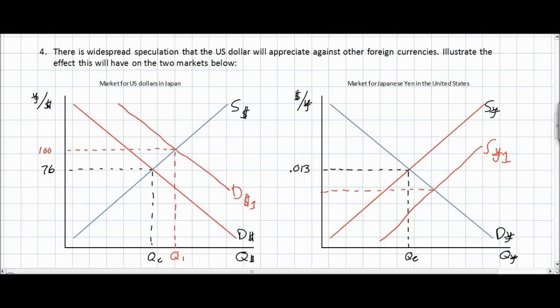The increase in the supply of Japanese yen in the United States will cause the exchange rate of the yen against the dollar to decrease to 0.01 — which is the inverse of 100. The decrease in the value of the yen will mean that American households will demand a greater quantity of yen in order to buy more Japanese goods and services. As we can see, speculation that the US dollar will increase in value leads to an increase in the current demand for dollars in Japan, causing the dollar to appreciate. At the same time, the supply of yen in the United States increases, causing the yen to depreciate.